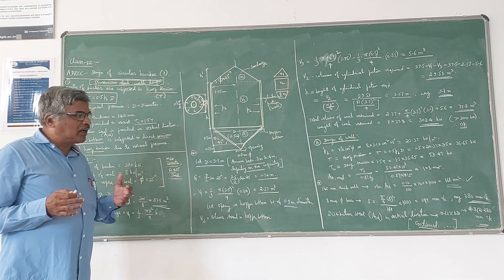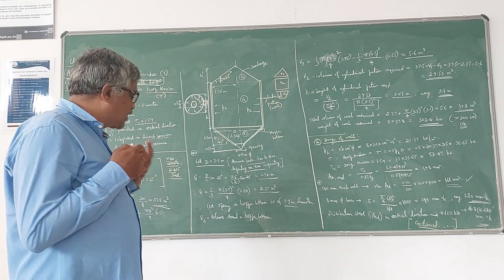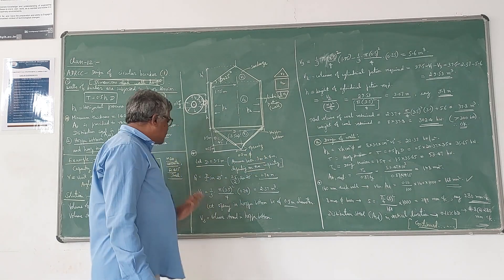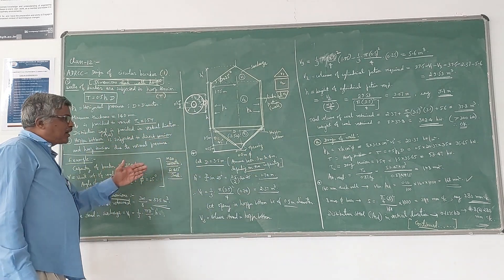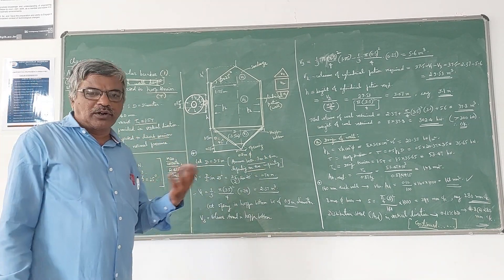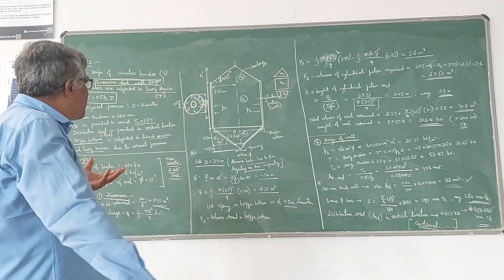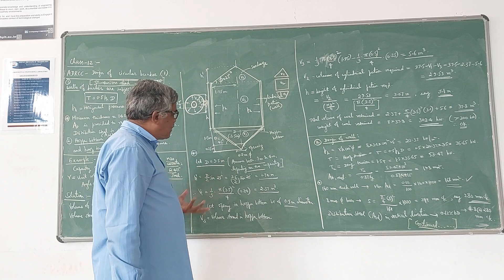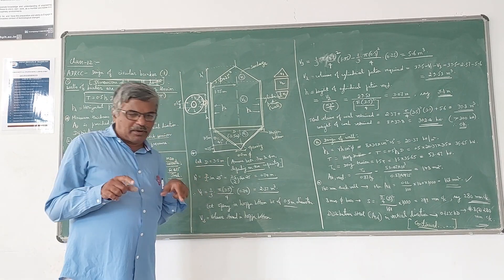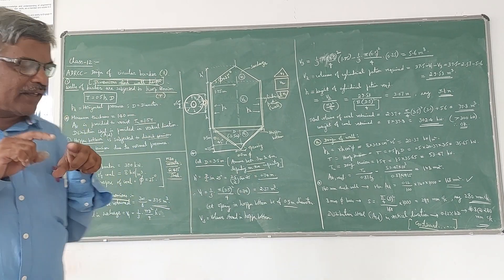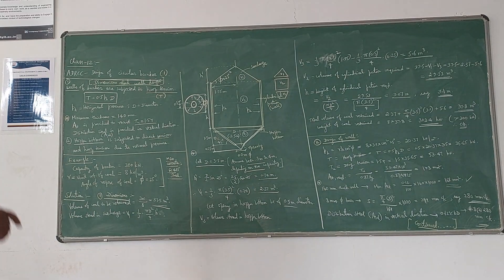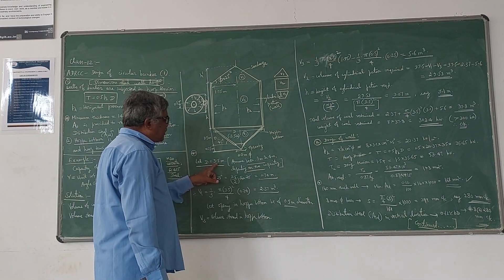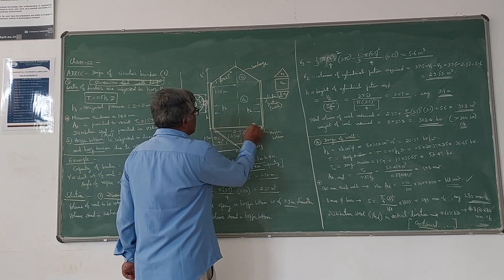If you are asked to design a bunker for a capacity of 400 kN, you can assume 4 meters or increase the height. In the case of a rectangular bunker, we assume the length and width; here only the diameter is assumed. So, I have assumed a diameter of 3.5 m for this problem.